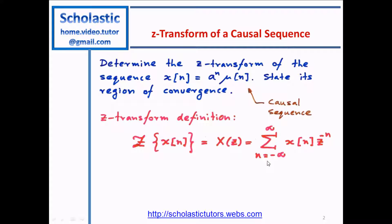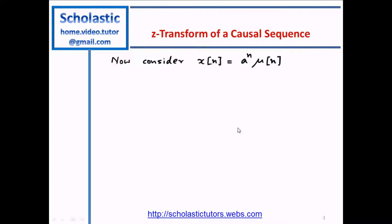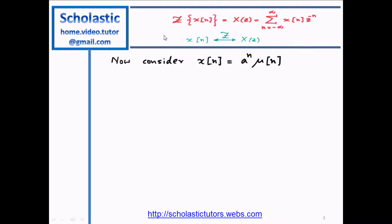So this is the definition of the Z-transform. We can also write it as: X[n] transforms to capital X(Z), meaning a discrete function becomes a continuous function. Now let's see the example. X[n] equals A to the n times mu[n]. What we need to do is apply the transform definition, where X[n] is multiplied by Z to the minus n and we take the summation.